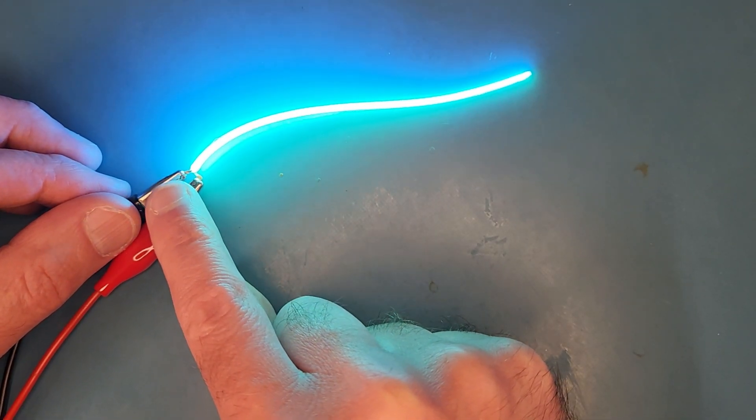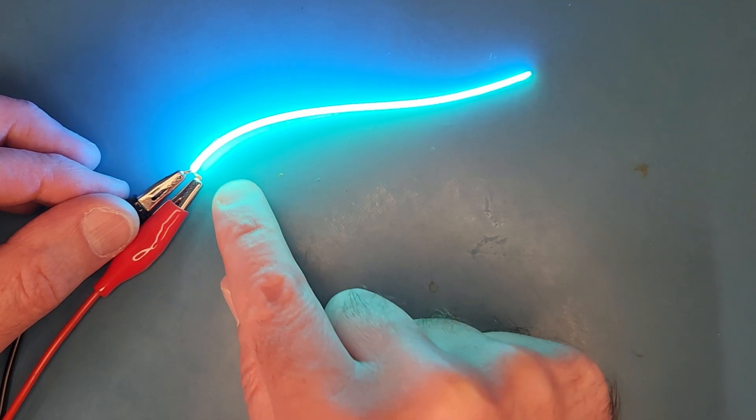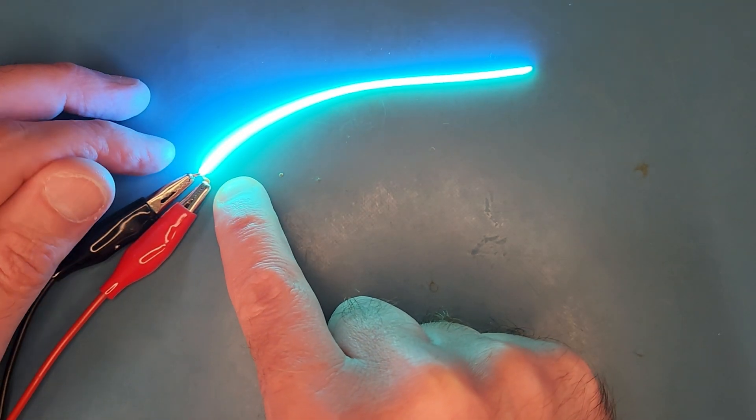One thing to note, though, is that the copper foil does seem quite flimsy. So if you put a lot of mechanical stress on it, you may break the leads.